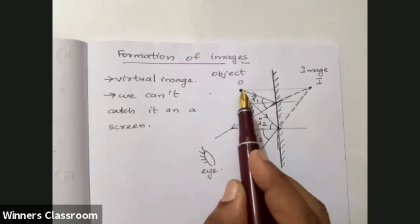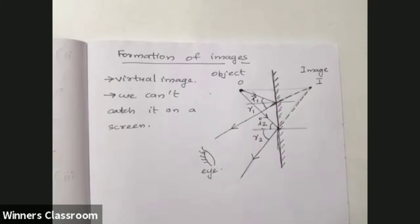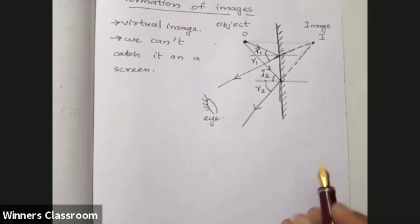Now we have a point object, and the image is also a point. The size of the image is the same size as that of the object. Point object is clear. For an extended object, same mirror principles apply.